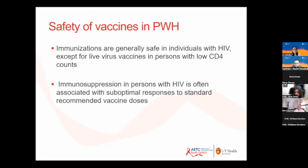The other concern is efficacy. Immunosuppression in patients with HIV may lead to suboptimal responses to standard recommended vaccine doses — when CD4 count is low, the body may not mount an adequate response. Guidance suggests you can wait until immune reconstitution and CD4 goes above 200 to vaccinate, or still vaccinate if the risk is higher. If the patient hasn't mounted an adequate response, revaccination is recommended when CD4 goes above 200.